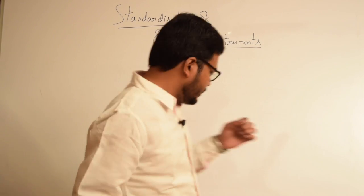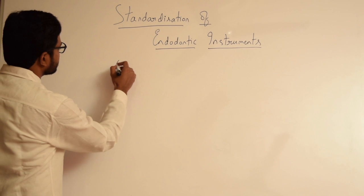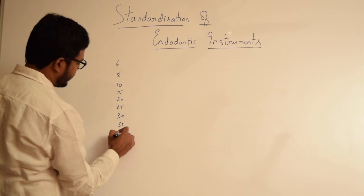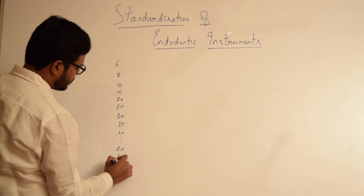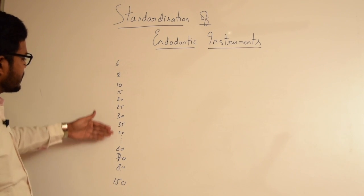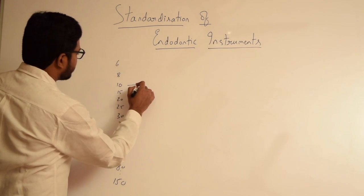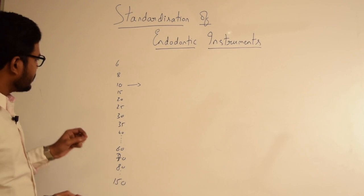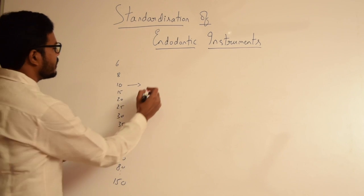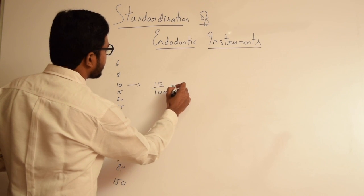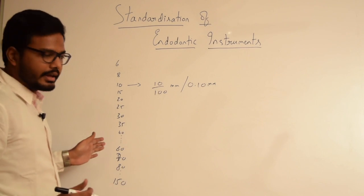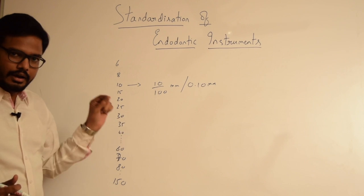The first recommendation: instruments are numbered starting from 6, 8, 10, 15, 20, 25, 30, 35, 40, and so on up to 60, 70, 80, till 150. When I say a size 10, it indicates the diameter of the instrument at the tip in hundredths of a millimeter. So a size 10 file has a diameter of 10/100 mm, or 0.10 mm. A given number in this series indicates the diameter of that particular instrument at its tip in hundredths of a millimeter.